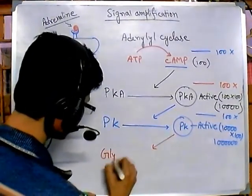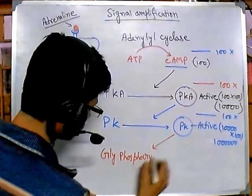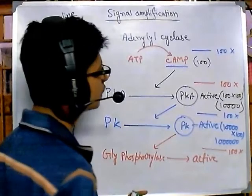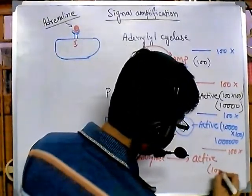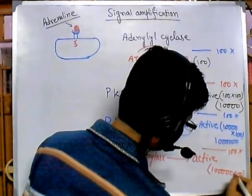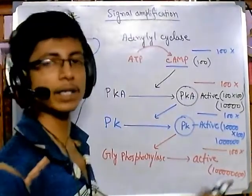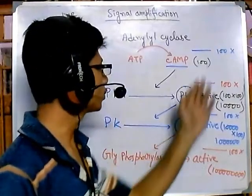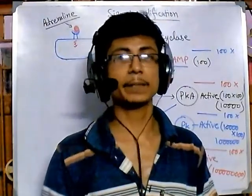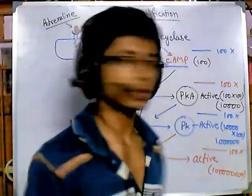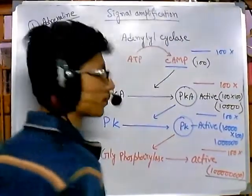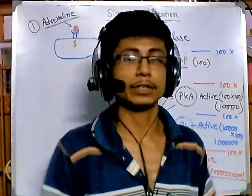Each of those phosphorylase kinase molecules finally activates glycogen phosphorylase, again with a 100-fold increment. So starting from cyclic AMP, every step increases by 100 times. Tracing through the entire cascade, one molecule of adrenaline ultimately activates approximately 100 million glycogen phosphorylase molecules.